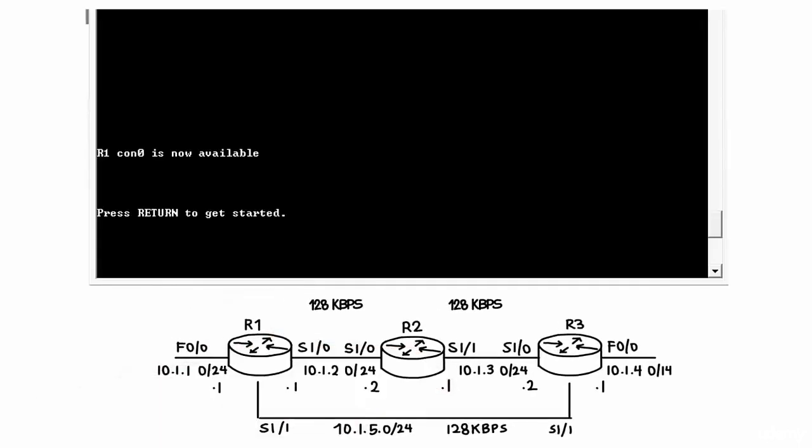Here is our sample network. We have Router 1 with IP address 10.1.1.1 on FastEthernet 0/0 and 10.1.2.1 on Serial 1.0, which is connected to R2. R2 is configured with 10.1.2.2 on Serial 1.0 and 10.1.3.1 on Serial 1.1. R3 is configured with 10.1.3.2 on Serial 1.0 and 10.1.4.1 on FastEthernet 0/0. R1 and R3 are also connected via another Serial link, configured with 10.1.5.1 on R1 and 10.1.5.2 on R3.